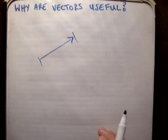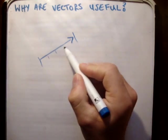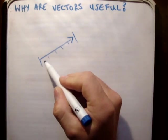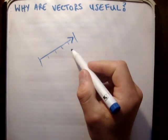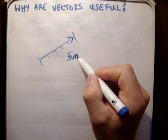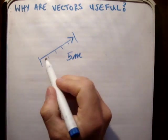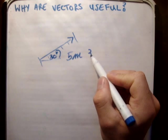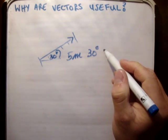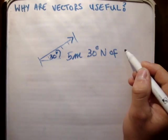If something is 5 meters long, you break this into 1, 2, 3, 4, 5 units. Each unit represents a meter. So this would be a vector of 5 meters long. And if this is 30 degrees here, it would be 5 meters long at 30 degrees north of east.